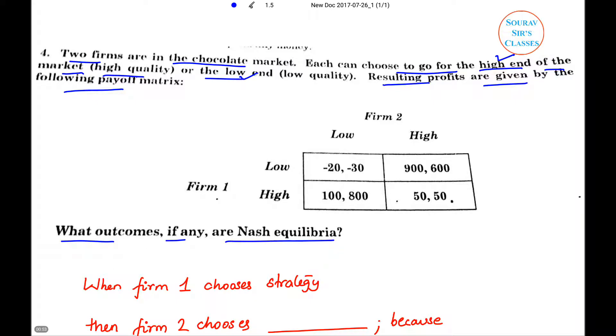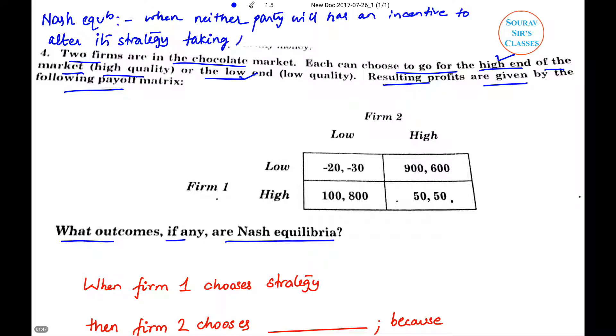So this is the matrix we need. What outcomes, if any, are Nash equilibrium? Now first, let us define what we mean by Nash equilibrium. Nash equilibrium will exist when neither party will have incentive to move, neither party will have incentive to deviate or alter, has an incentive to alter strategy, its strategy, taking the other strategy as given.